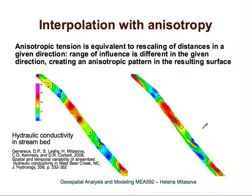Another important tool when using spline interpolation — and other interpolations that depend on distance — is anisotropy. Anisotropy is useful when working with anisotropic geomorphic features, for example stream landforms in a stream bed or landforms influenced by wind. In such cases, we can use different tension in different directions, meaning we rescale distances by a different parameter in different directions to achieve the anisotropic shape.